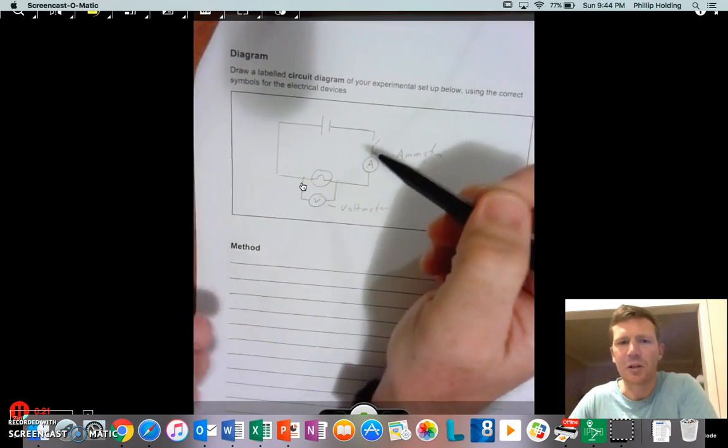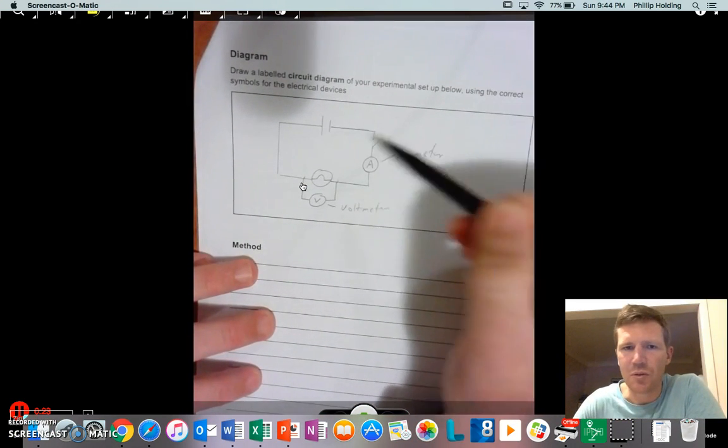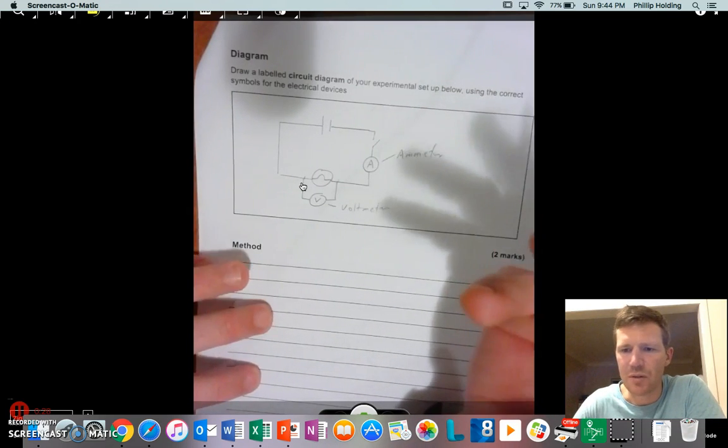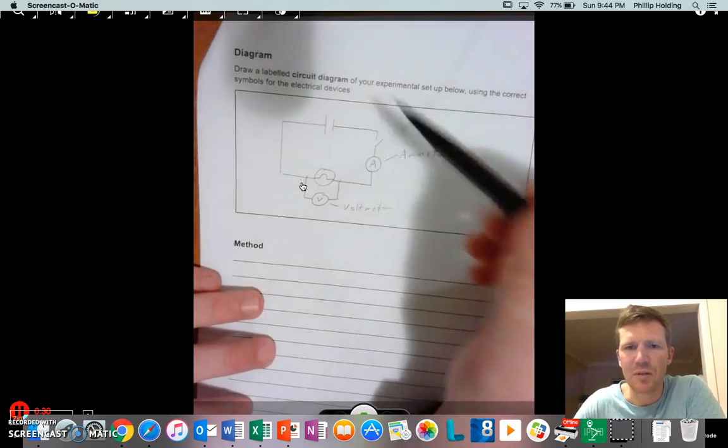In this case, I've drawn a little example here. Now this is not what you're doing because we're not doing bulbs. In ours, we're actually doing resistors, so obviously you have to draw yours accordingly, but this will give you the right idea.